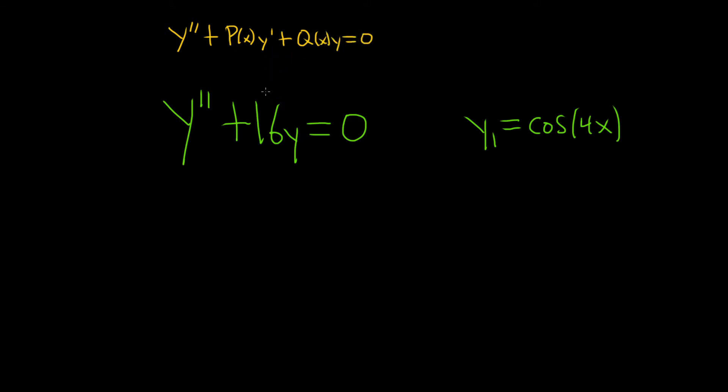You'll notice right away that p of x is missing because y prime is missing. That means that p of x must be equal to 0 in this problem. This is super important, so absolutely key to notice that that's the case.